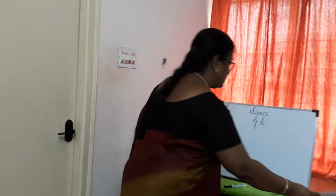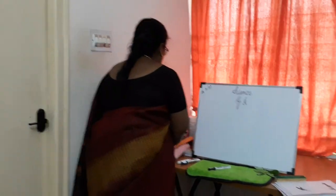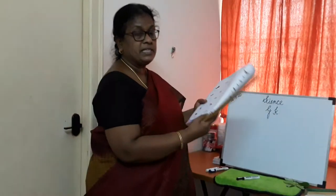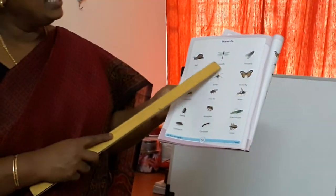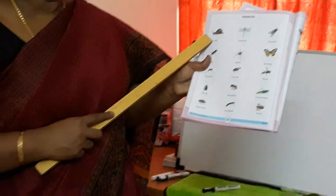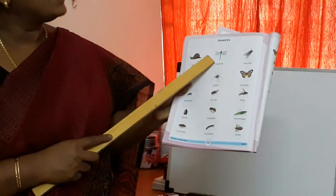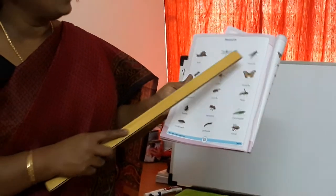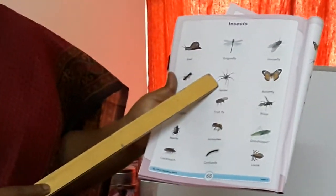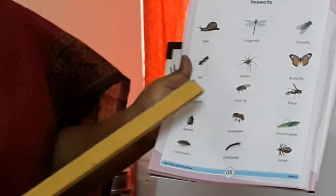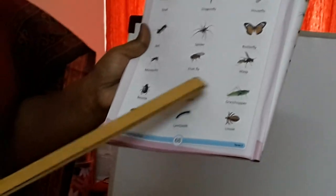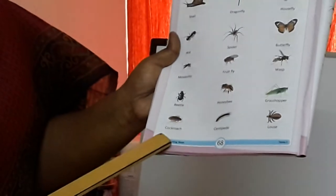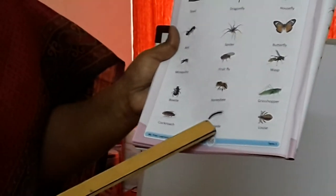Now I will show you in the term book. You all take the term book, page number 68, and see this. Names of insects. See, the first one is snake, dragonfly, housefly, ant, spider, butterfly, mosquito, fruitfly, wasp, beetle, honeybee, grasshopper, cockroach, centipede, louse.